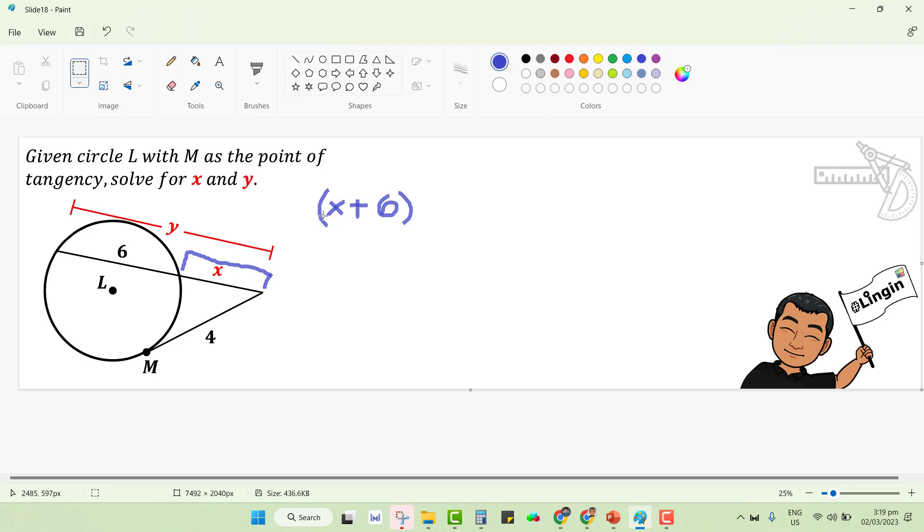Let me move this a little bit higher so that we can save some space here. To be multiplied with the exterior secant segment, which is x, is equal to the square of the measurement of the tangent segment. In this case, it's 4 and you have here squared.